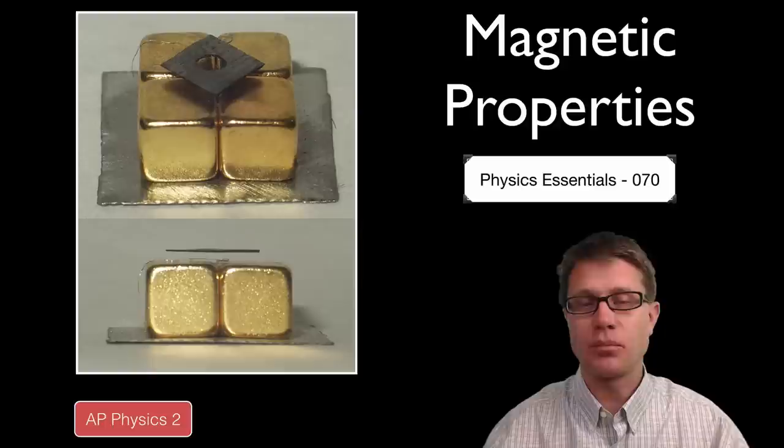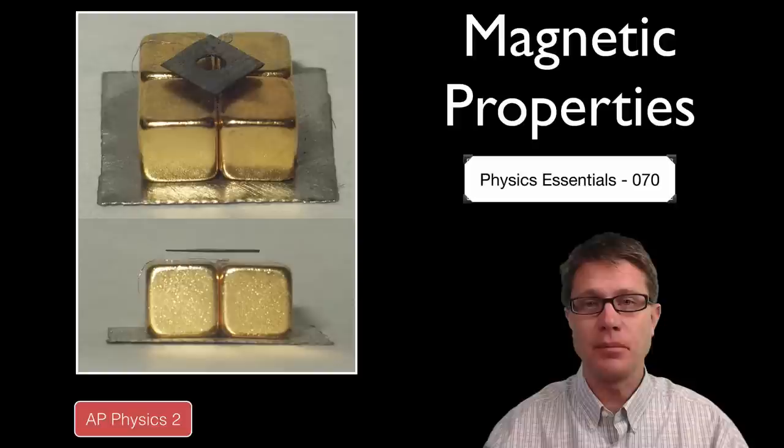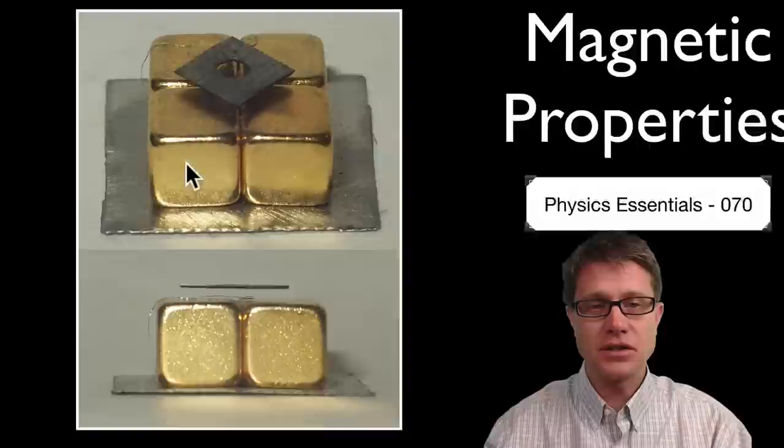All material in the universe has magnetic properties because all material in the universe has electrons which are tiny little magnets.